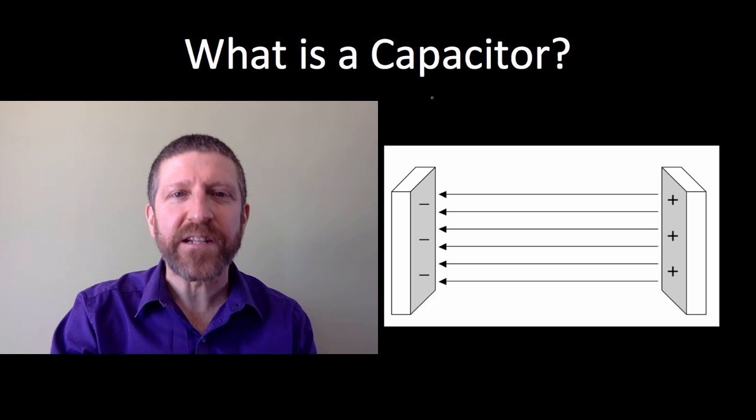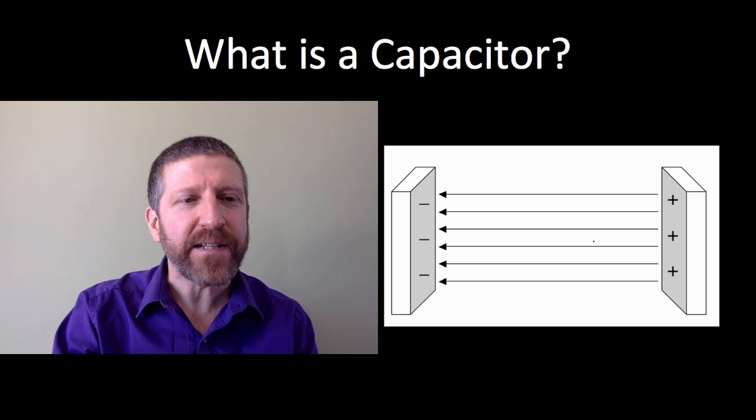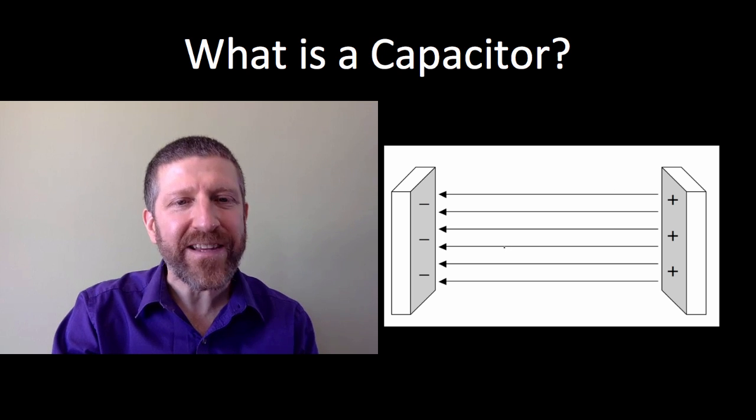Basically, all a capacitor is in its most simple form, two plates, which are charged oppositely, separated by some distance. By the way, it could be a vacuum in between the two plates as well as an insulator.